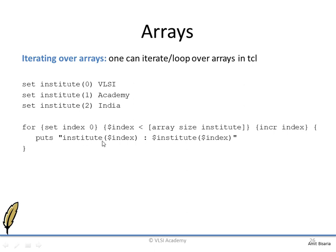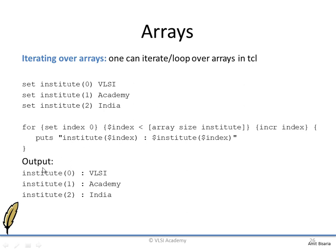Inside the loop, the body says institute of index, where index starts at 0. So institute(0) will refer to the first array value. This will print 'institute(0): VLSI' in the first statement, then 'Academy' after incrementing. After every execution the index keeps incrementing. The output will look like: institute(0) VLSI, institute(1) Academy — the dollar sign makes the variable value be printed rather than the literal text.